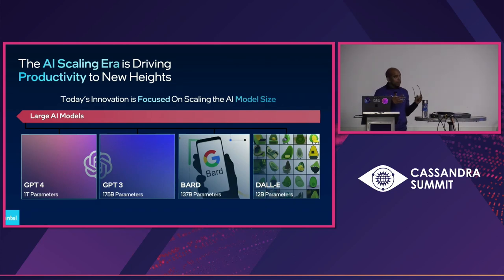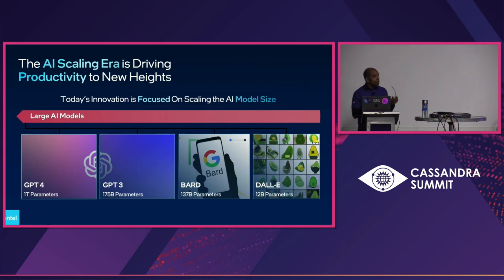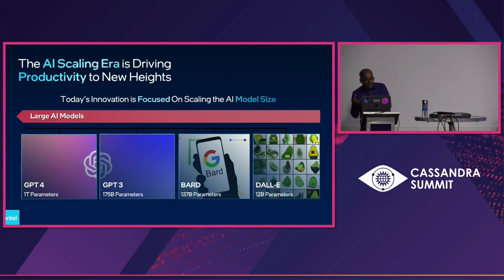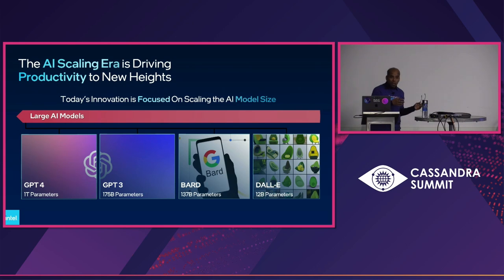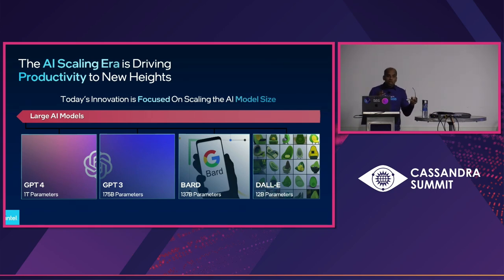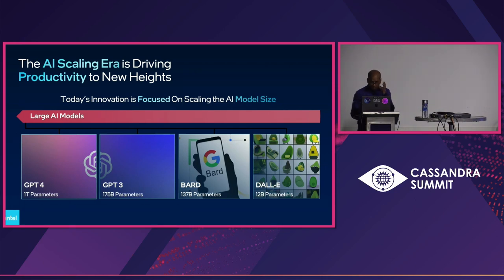In terms of large language models, we started with DALL-E, BARD, GPT-3, and 4. The number of parameters are increasing and driving productivity to new heights. Innovation is focused more on scaling the AI model size — but is that the right approach? More recently, Gemini was introduced by Google, and Purple Llama was introduced by Meta, which we'll talk about in a second. Is openness versus closeness a factor? How do we build more transparency and trust in these models? That's a critical element Intel really deeply cares about.